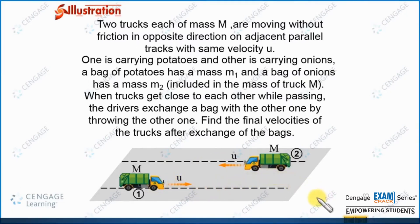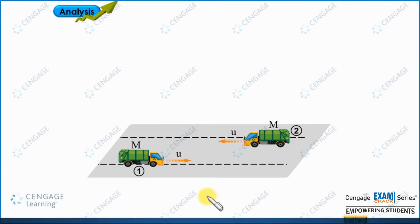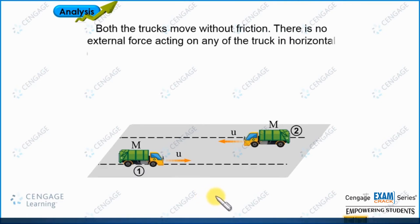Let us make a diagram for the next phase. Now let us analyze the forces acting on the system. It is given there is no friction anywhere. That means there is no external force acting on any of the tracks in the horizontal direction. Both tracks move without friction, so the linear momentum of each track will always be conserved in the horizontal direction.